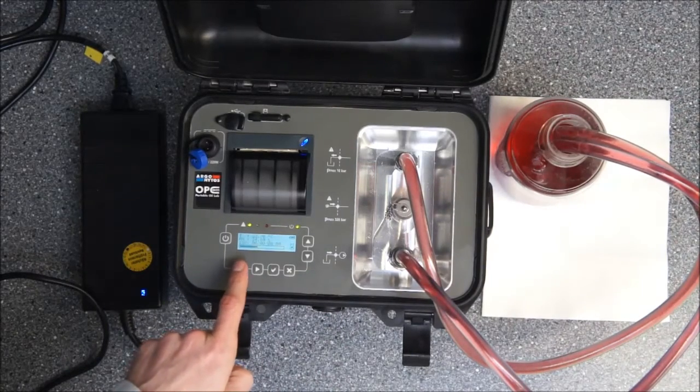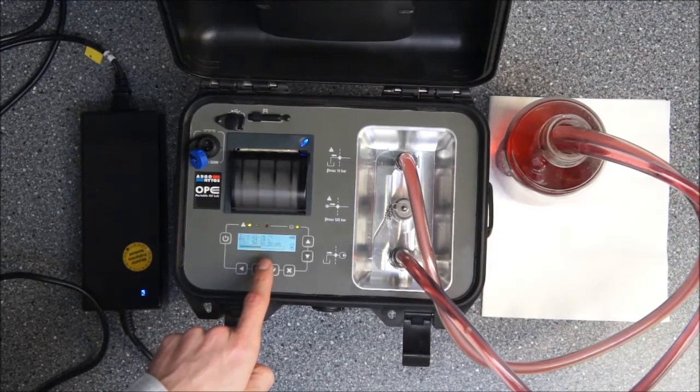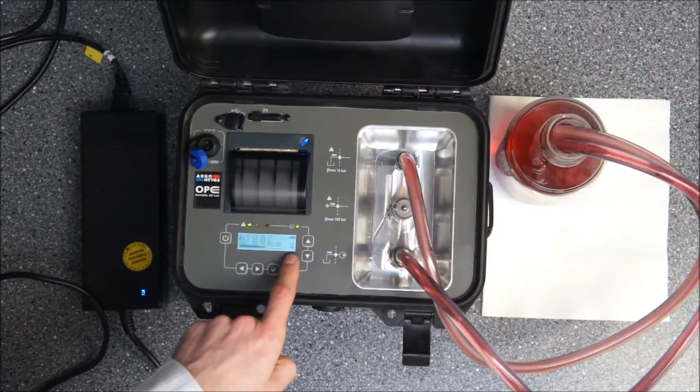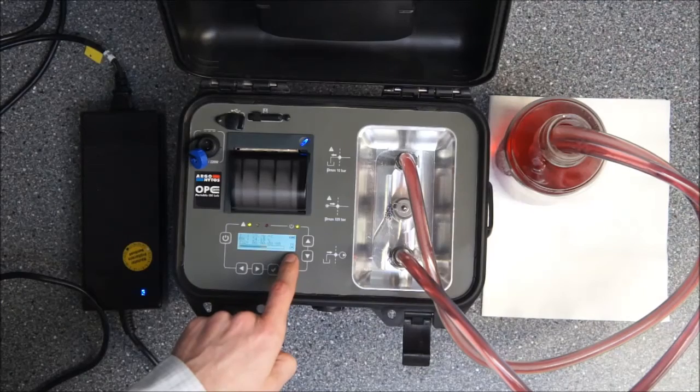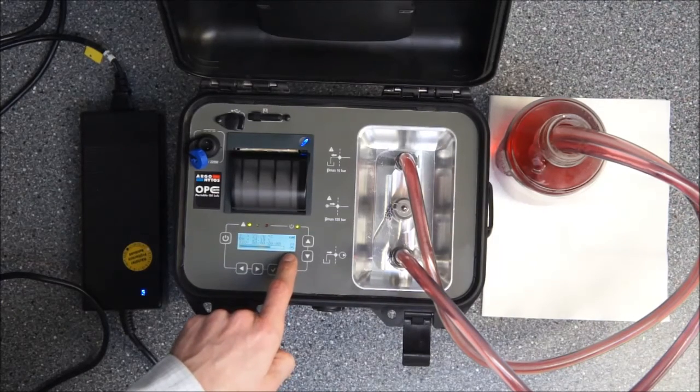There is a progress bar on the bottom that is just indicating how long the measurement still takes and how far the progress is. On the right side you see a small pictogram for the pump, so that's the pump mode we are currently in, and also you see the M for manual mode on top of it.